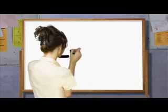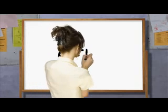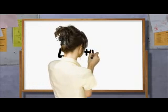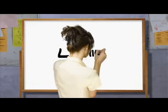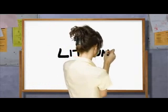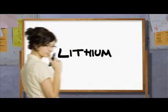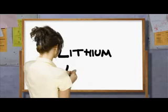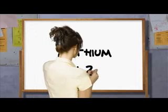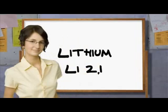You'll also need to be able to write down the electronic structure of an atom. Let's take lithium again. This is written as the chemical symbol Li, followed by the number of electrons in each energy level — in this case, 2,1.